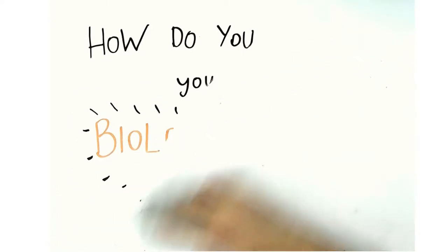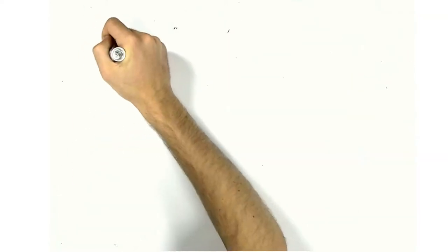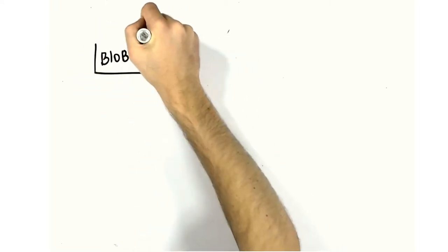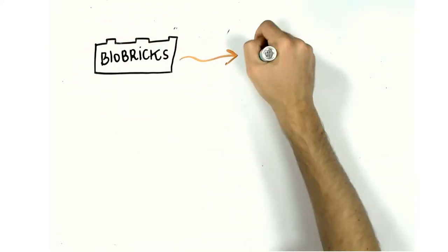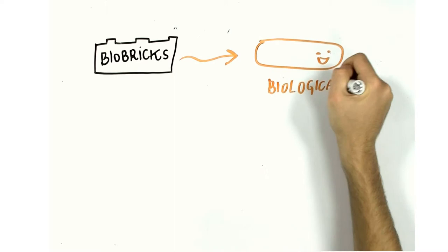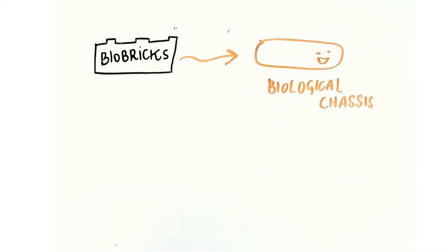If you already have an idea of how to look at the parts registry and design your genetic devices using BioBrick parts, you need to put these pieces of design DNA into what is known as a biological chassis or a cell.